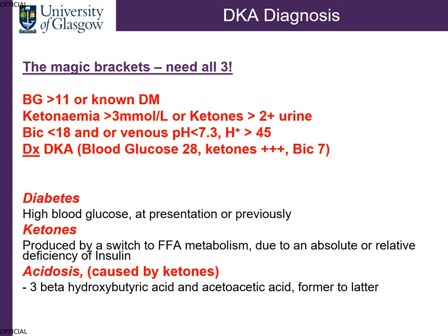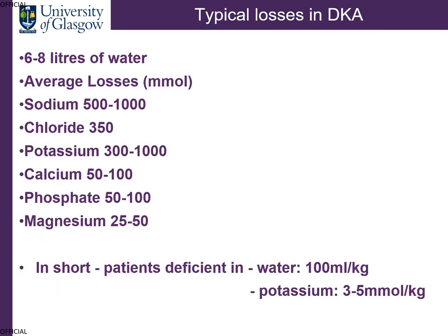The two main ketones that are converted to acids are beta-hydroxybutyric acid and acetoacetic acid — the former is converted into the latter, and the urine measures the latter. In terms of typical losses, dehydration is a major feature and individuals can potentially lose six to eight litres of water. They'll lose a fair bit of sodium and chloride. Potassium levels are also depleted, although sometimes you may see a slightly higher blood potassium level to help buffer the acidosis. Patients typically lose about 100 ml per kilogram of body weight and around three to five millimoles of potassium per kilogram of body weight.